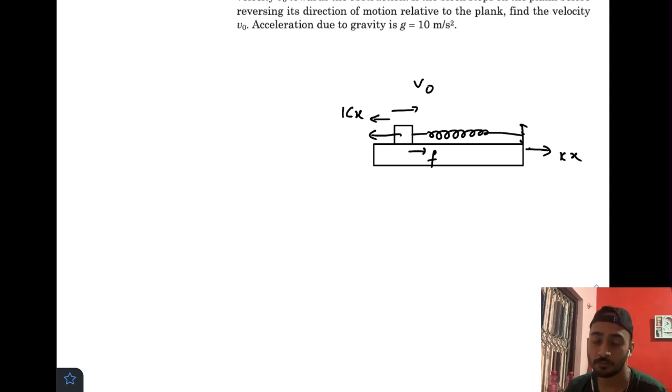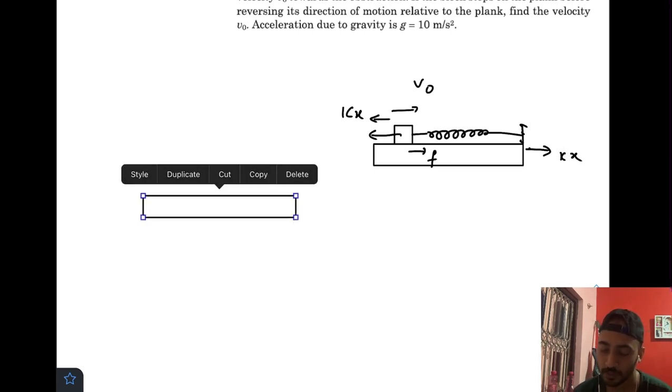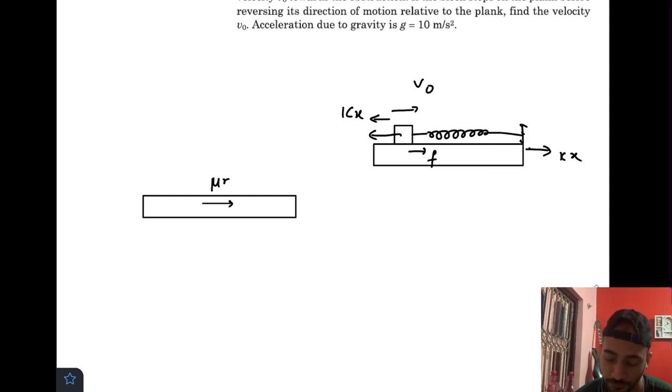I will solve this question while standing on the plank, by changing my frame of reference to the plank. First, let me draw the free body diagram of the plank. When this block starts moving towards the right, the forces acting on the plank would be the frictional force μmg and the force due to spring kx at any instant t. The total acceleration created by these two forces would be this one.